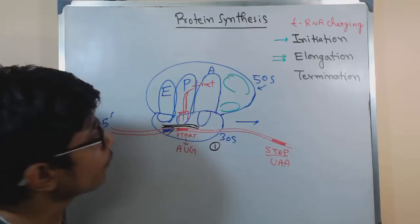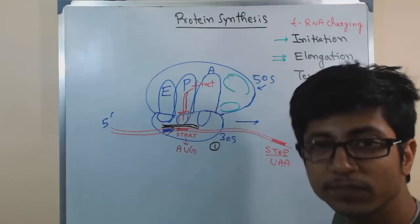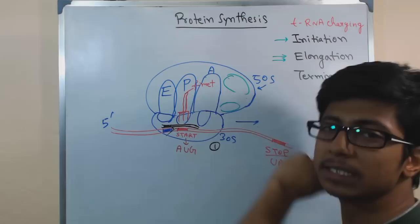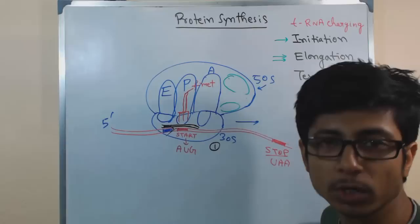For the elongation phase to occur, each tRNA will bring one particular specific amino acid to the A site, because the A site is where a charged tRNA will come and bind. Once they are attached with the A site, the second step is the attachment of amino acids with each other via peptide bond, which is called peptidyl transferase activity.